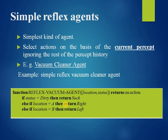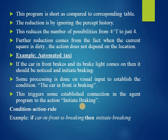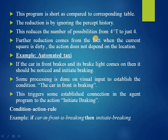The most obvious reduction comes from ignoring the percept history, which reduces the number of possibilities from 4 raised to T to just 4. Further reduction comes from the fact that when the current square is dirty, the action does not depend on the location — it just cleans the square.